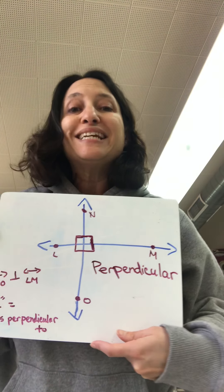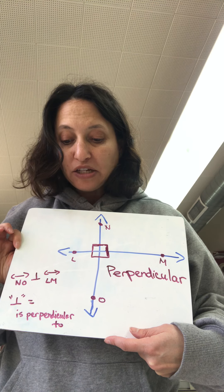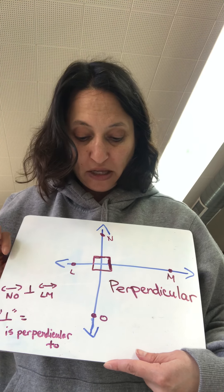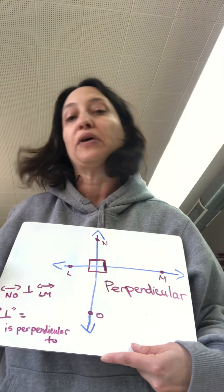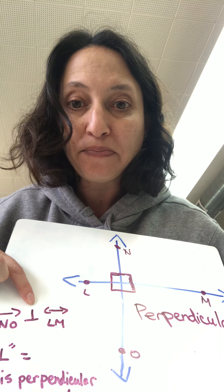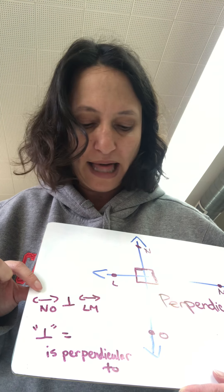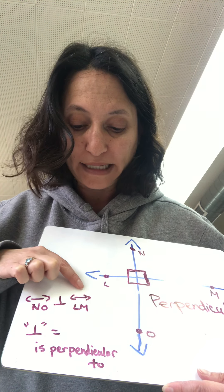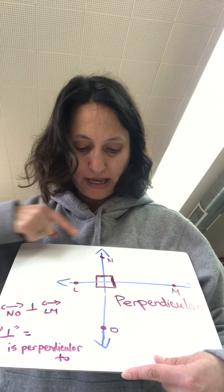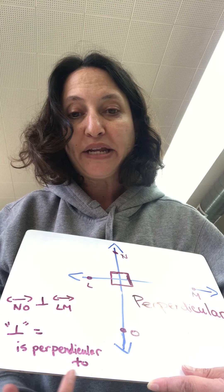Let's talk about perpendicular lines. Perpendicular lines are lines on a plane that intersect to form four right angles. When they intersect, they cross exactly and make four right angles. Do you see this little symbol right here? That means "is perpendicular to." So here's how I would read it: line NO is perpendicular to line LM. This symbol means "is perpendicular to."